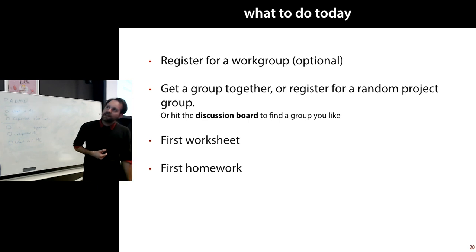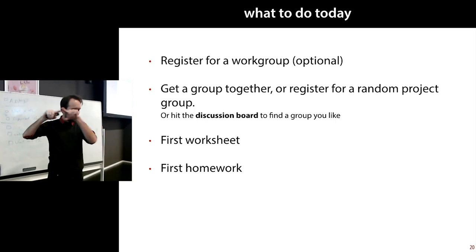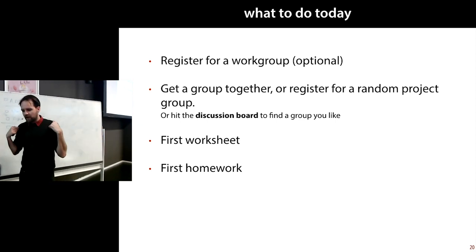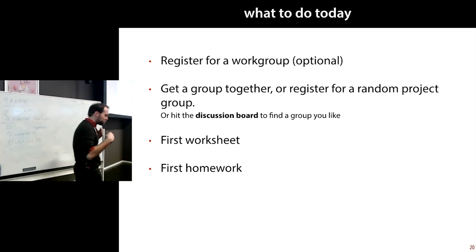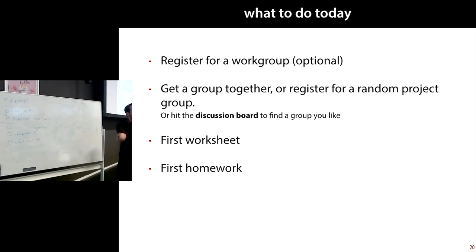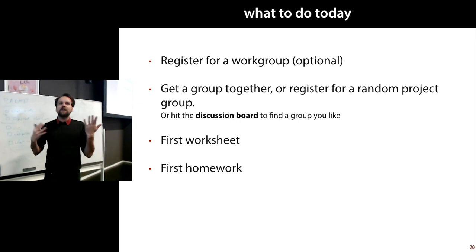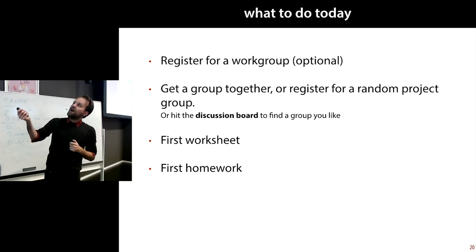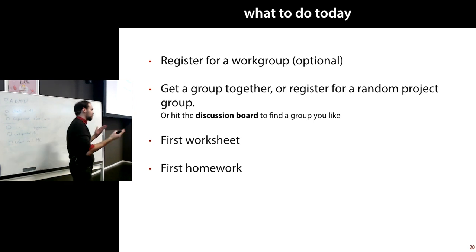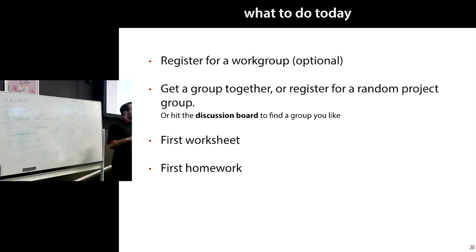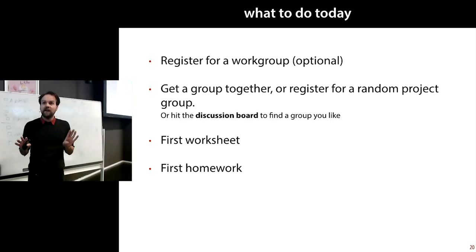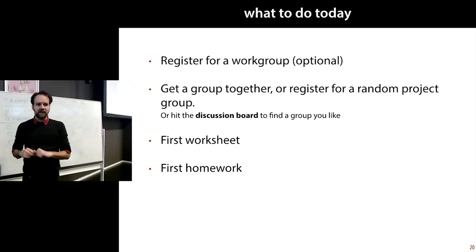Here's what to do today after the lecture: get a work group together. There's a thread on the Canvas discussion board where, if you have something specific in mind — a very ambitious group, an inflexible schedule — you can ask for a particular kind of group. In general the rule is self-sign-up: anybody can join any group that still has spots left. If you don't want a random person joining your group, get five people together and join a specific group together. Also have a look at the first worksheet and the first homework.